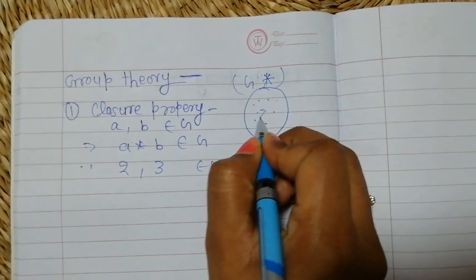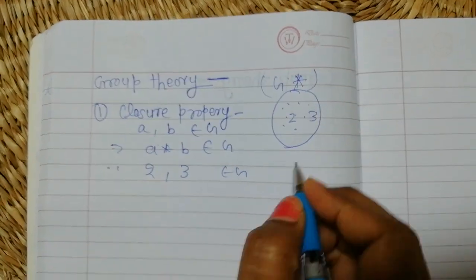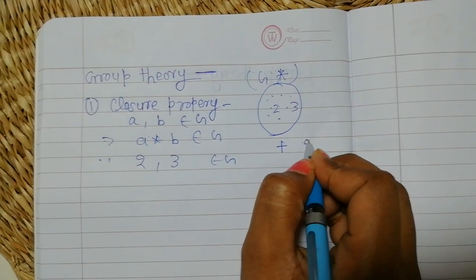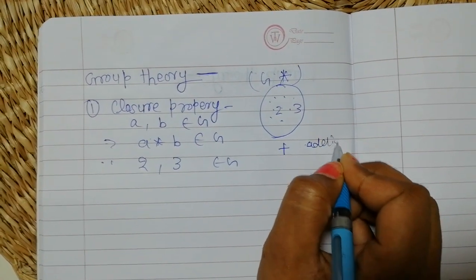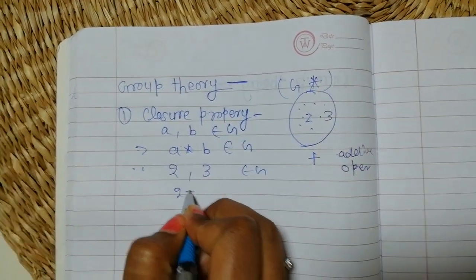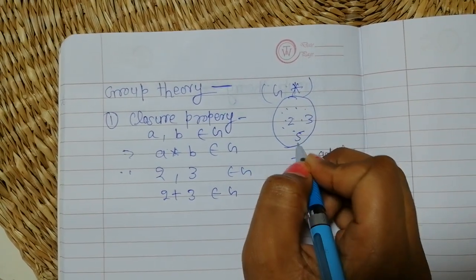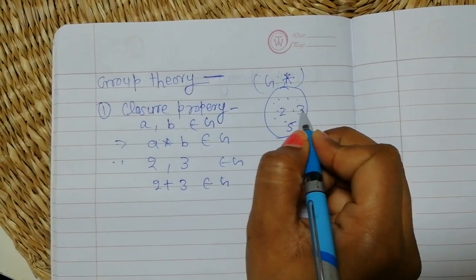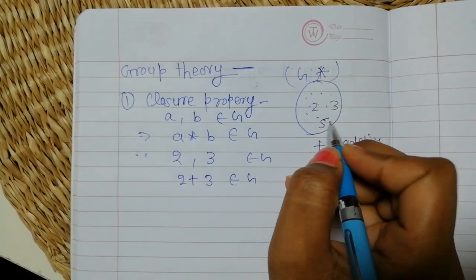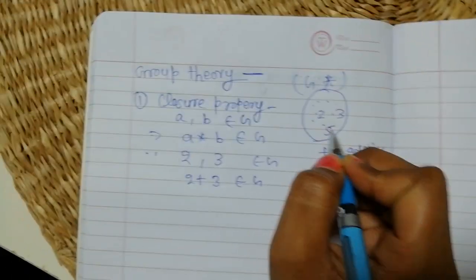For example, let we take two and three belonging to that group. We take the operation plus — we call this the additive operation. So we add two plus three; it also belongs to G. Here the result is five. When two and three are added, we get five, so five must be present in that group.